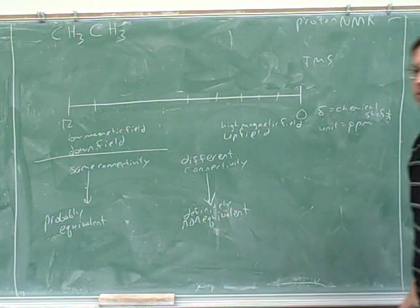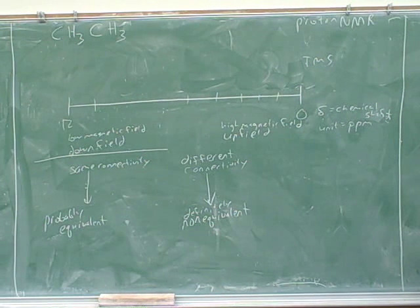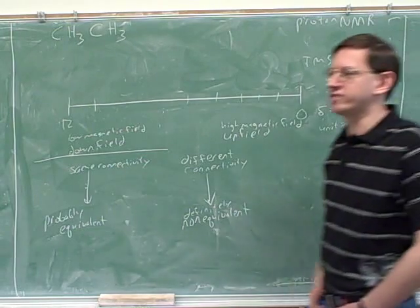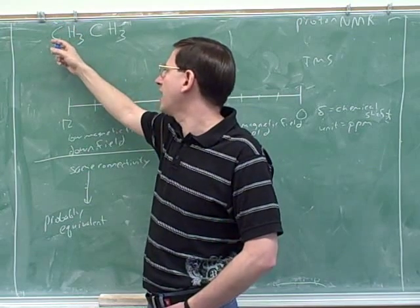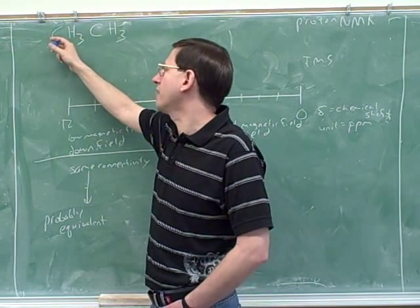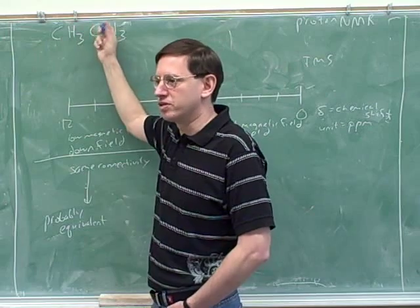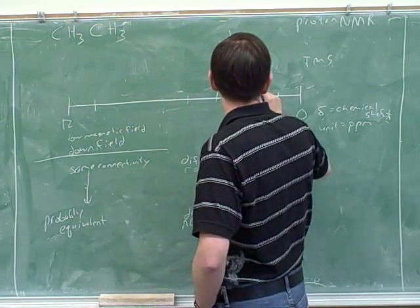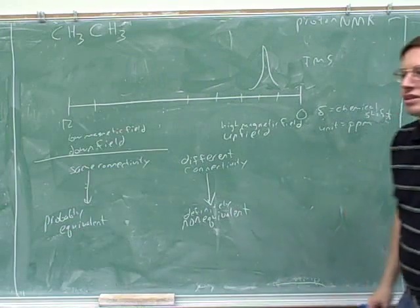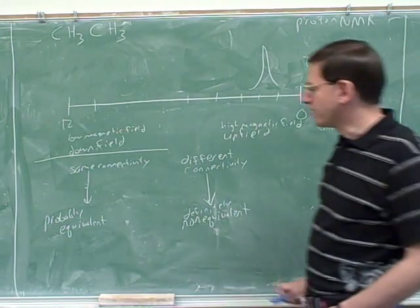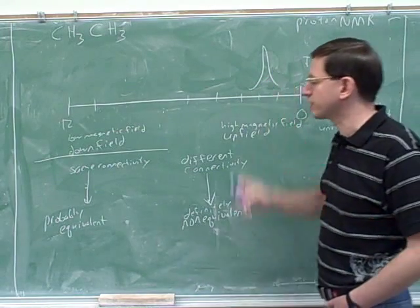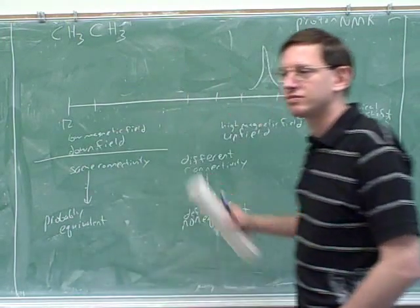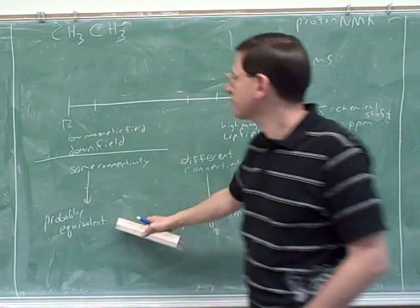How about ethane? How many peaks would this give us? These are still all equivalent — they all have the same connectivity. Each hydrogen is connected to a carbon that has two hydrogens and is also connected to a methyl group. So they all have the exact same connectivity, and this again gives us one peak. Even though there are six hydrogens, they'd all be absorbing in the same place.